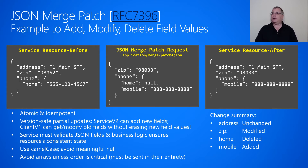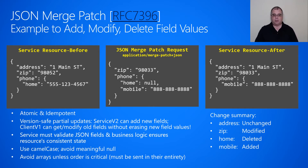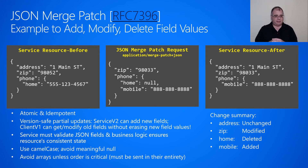JSON Merge Patch is also idempotent. What if the resource after the patch is what we're starting with, and we retry this JSON Merge Patch? Since address isn't mentioned, address is left alone. Since we're saying make zip 98033, and it was already 98033, it leaves it alone. The phone says delete home — well, home is already gone, so it's just double-deleted. And then it says set mobile to the 888 number — it's already that, so it leaves it alone. So JSON Merge Patch ends up being idempotent, which is a great thing.